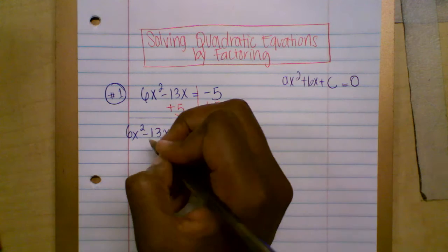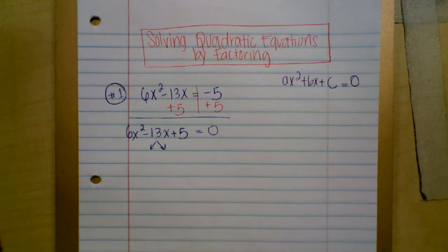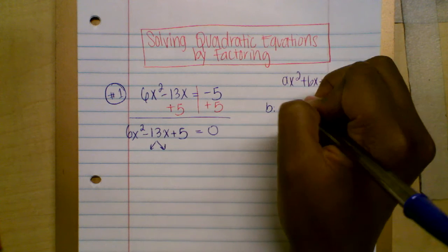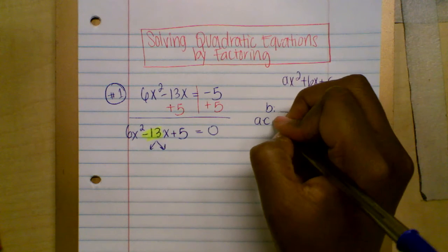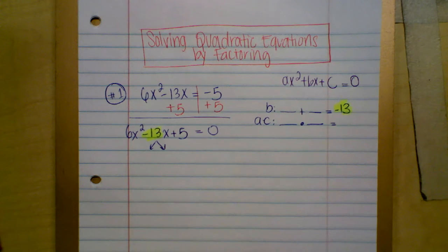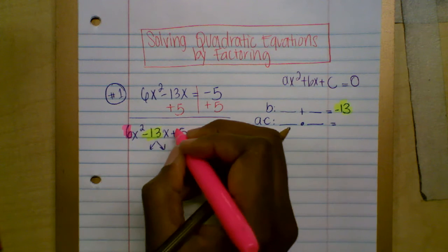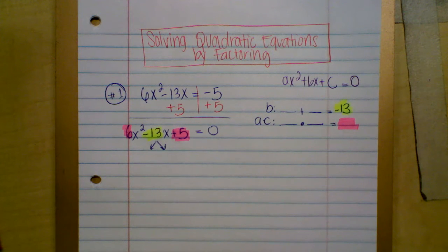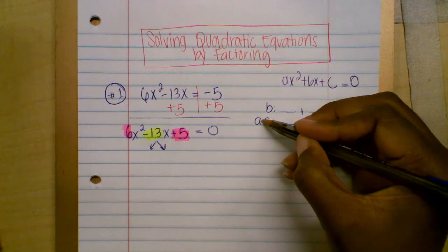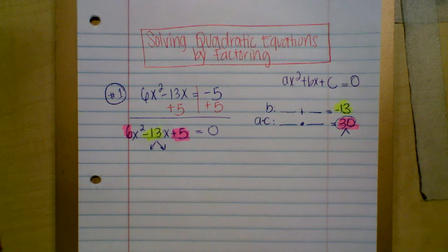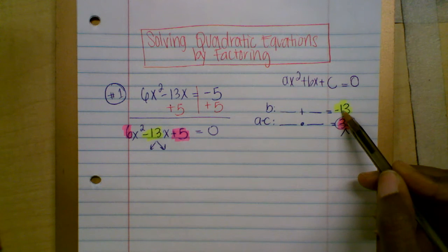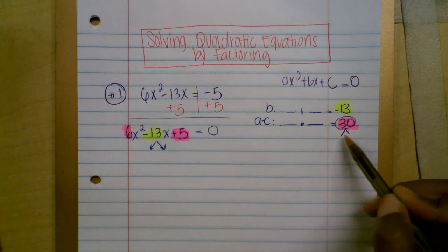I need to find two numbers to replace negative 13x. The trick is: find two numbers that add to the middle term, which is negative 13 — that's the value of b. Those same two numbers need to multiply to a times c. Here a is 6 and c is positive 5, so a times c equals 30.